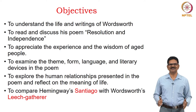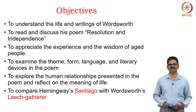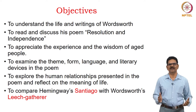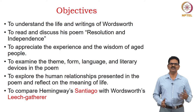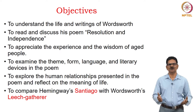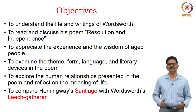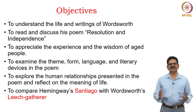The objectives are: to understand the life and writings of Wordsworth; to read and discuss his poem Resolution and Independence; to appreciate the experience and wisdom of aged people — in general, we tend to disregard the wisdom of old people, but in this poem we understand we can learn from them; to examine theme, form, language and literary devices; and to compare Hemingway's Santiago and Wordsworth's Leech Gatherer, a character with no name, simply an old man who gathers leeches.